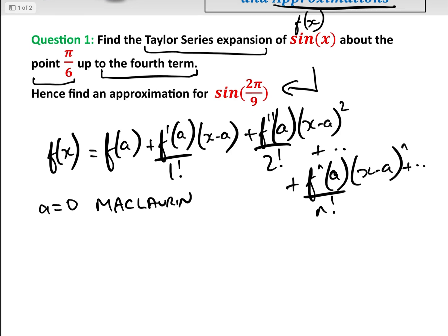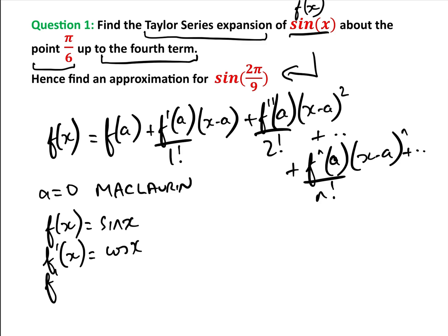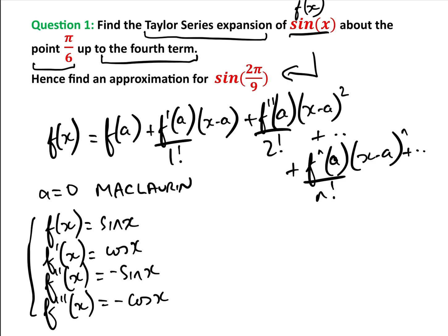So basically what we need to do: f(x) in this case is sine x, so f dashed of x equals cos x, f double-dashed of x is minus sine x, and f triple-dashed of x is minus cos x. We need those because we are doing it up to the fourth term.